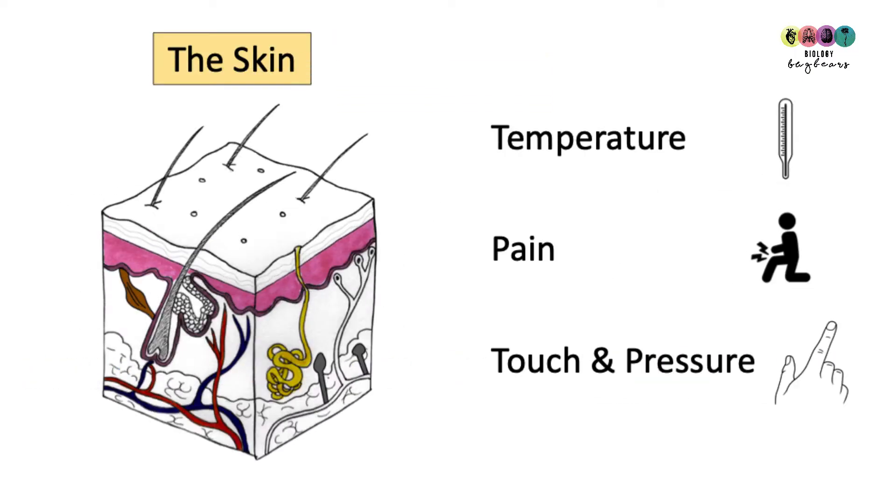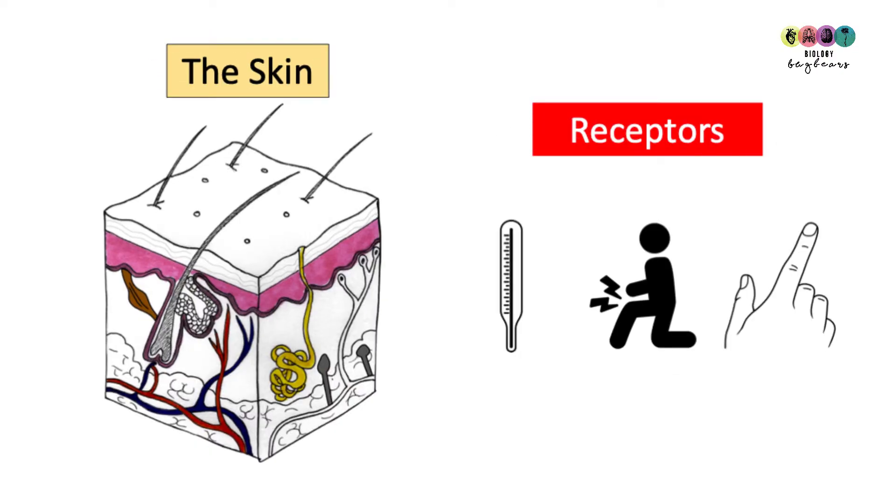So the skin is the largest sense organ in the body. It can detect temperature, pain, touch and pressure, so lots of different stimuli. The reason why the skin can detect all these stimuli is because of specialised receptors.